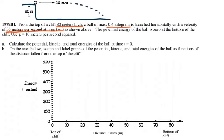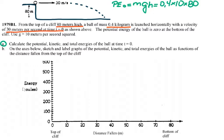The cliff setup shows the ball flying off. For part A, we calculate potential, kinetic, and total energies at t equals 0. The potential energy equals mgh, so it's 0.4 times 10 times 80, which gives us 320 joules.